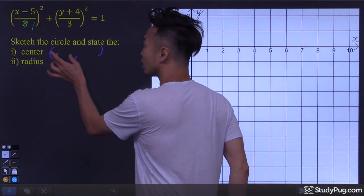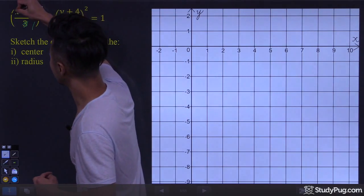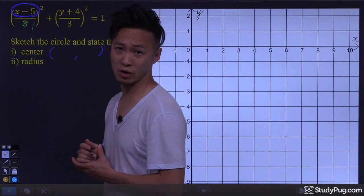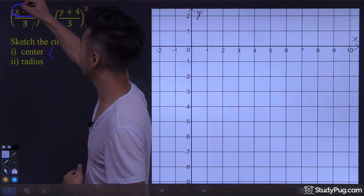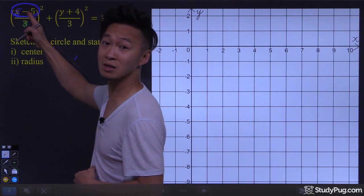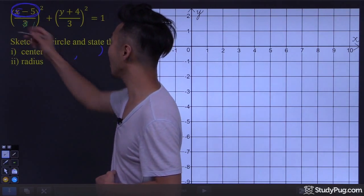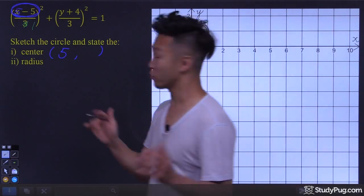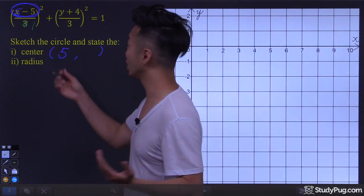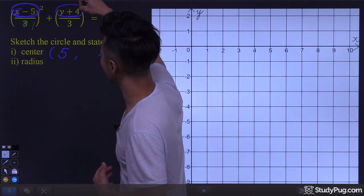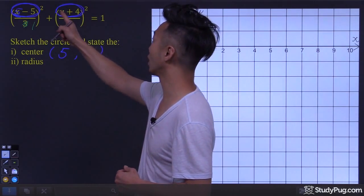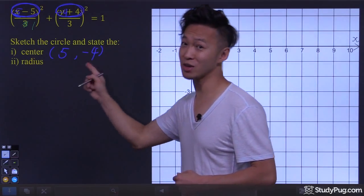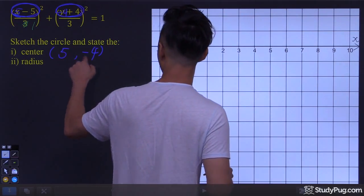When locating the x-coordinate for the center, we look at the x numerator. How do we make this numerator equal to 0? In this case, x simply has to be 5, because 5 minus 5 is 0, and that 5 is the x-coordinate for the center. For the y-coordinate, same thing — look at the y numerator and make it equal to 0. In this case, y would just have to be negative 4. And just like that, we found the center for the ellipse at (5, negative 4).